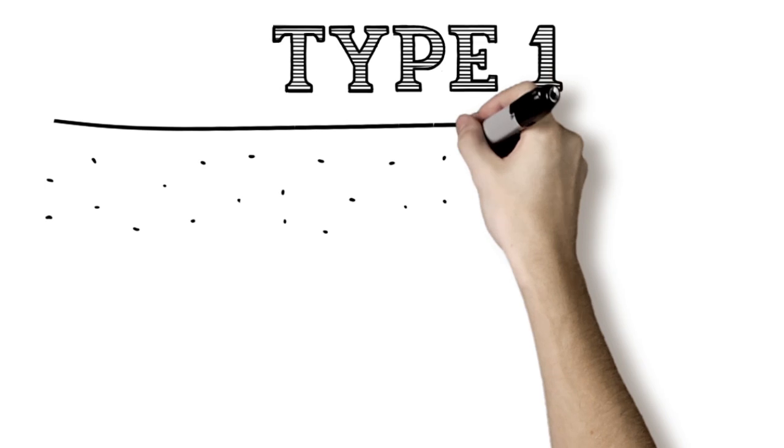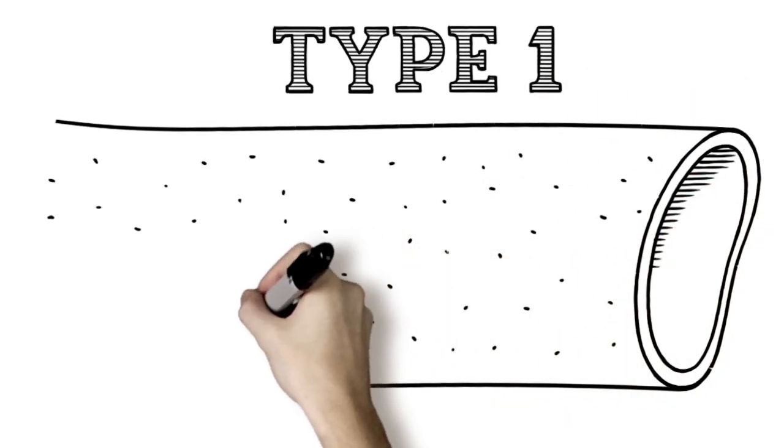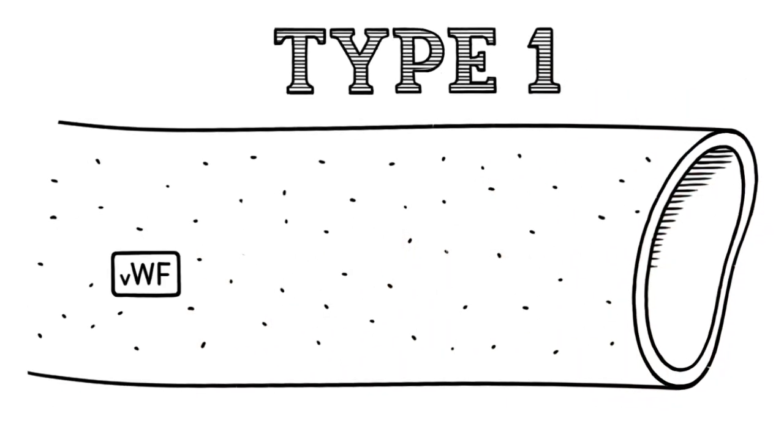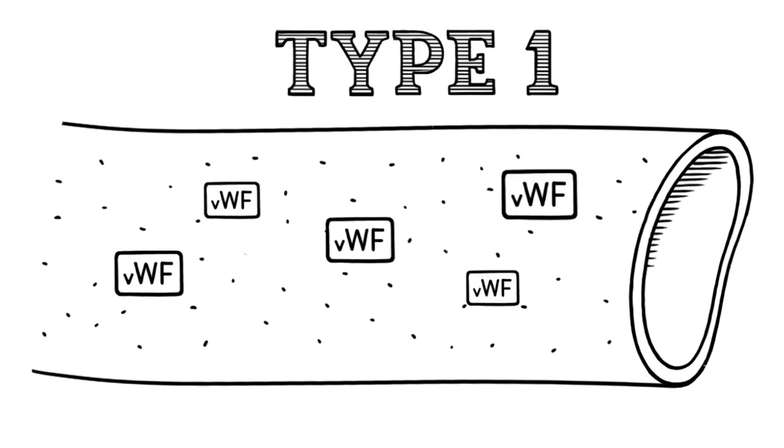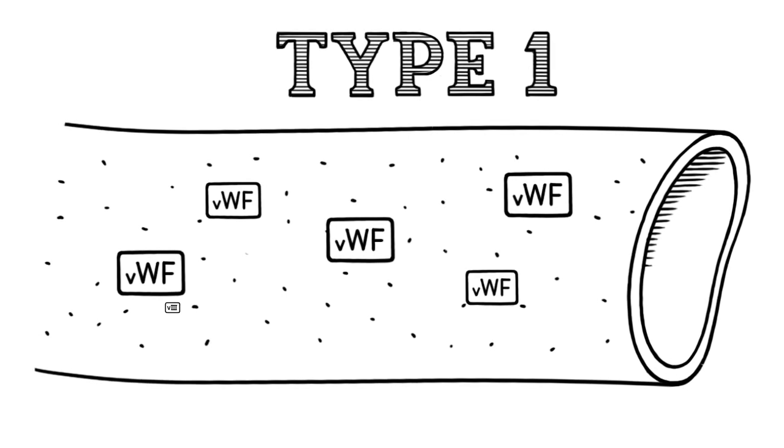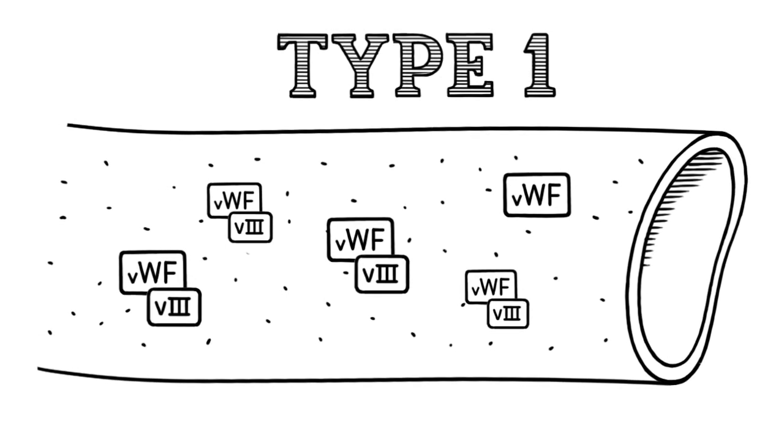There are several different classifications of VWD. In type 1 VWD, the body has lower than normal levels of Von Willebrand factor and potentially low levels of factor 8, another blood clotting protein.